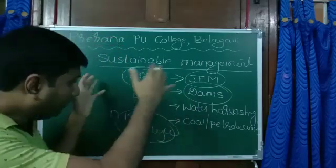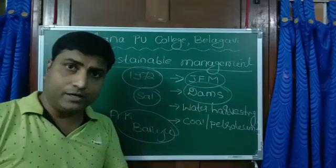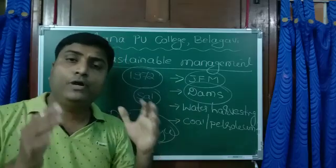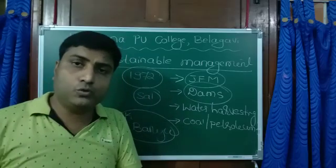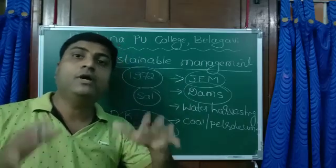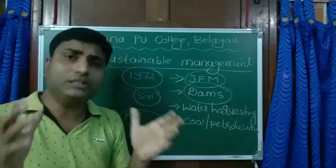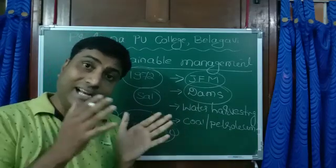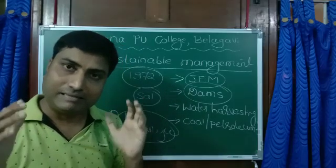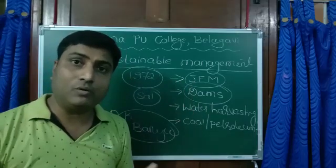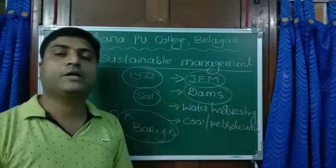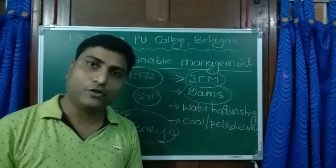All these concepts suggest that whatever resources we have — limited or unlimited — we have to use them, we cannot stay without using them, but at the same time we should use them in a judicious way so that they can be conserved for future generations as well. That's all about the content in the chapter of management of natural resources.